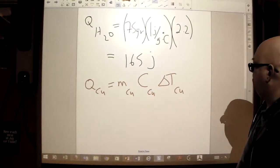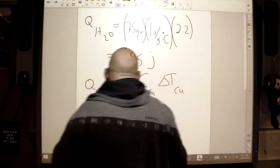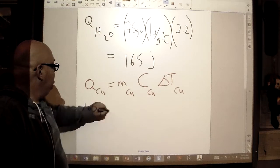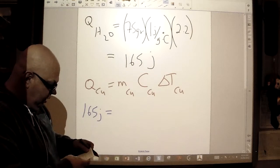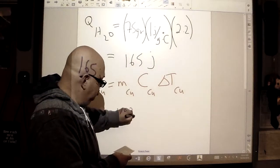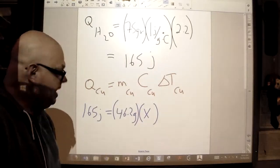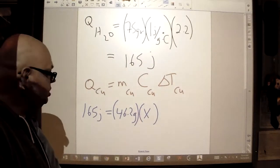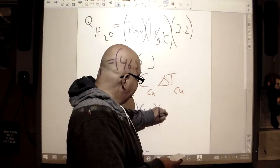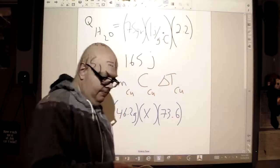What things do I need to put in? Let's see. I've got 165 joules is equal to, let's see, what was the mass of the copper? 46.2 grams multiplied by X, which is our specific heat, multiplied by our change in temperature. Now, that change in temperature is a bit bigger. It's 73.6.